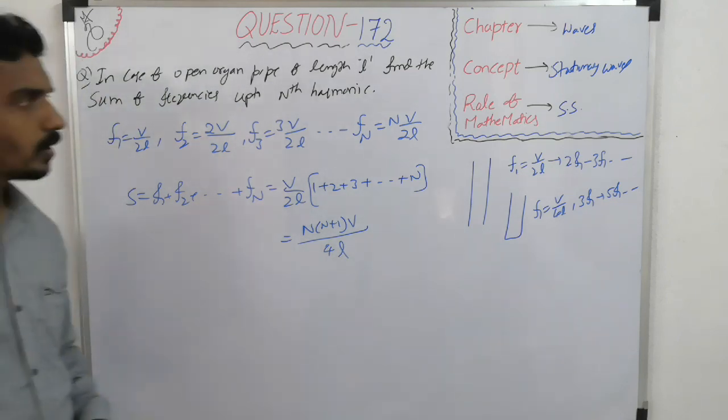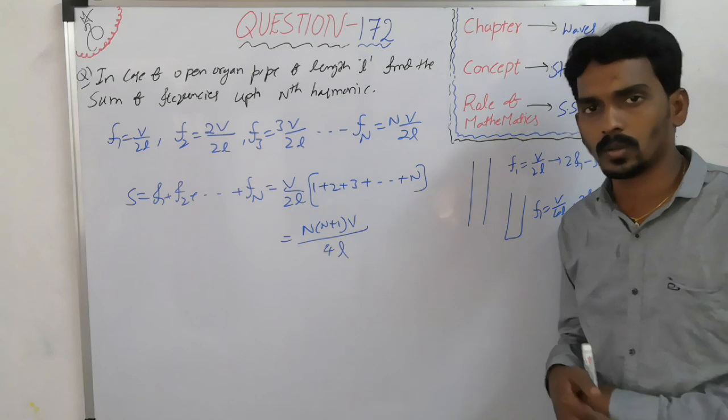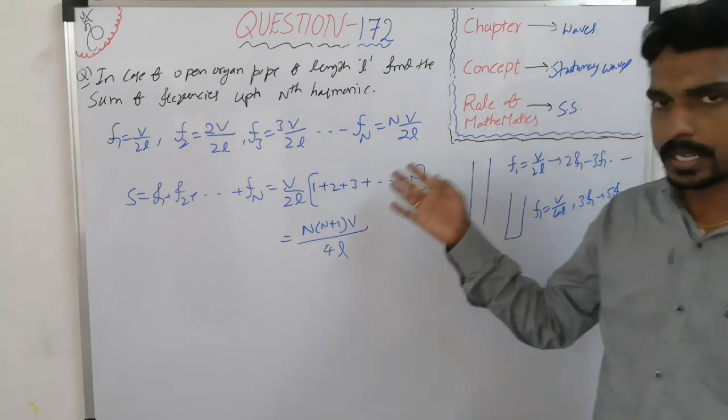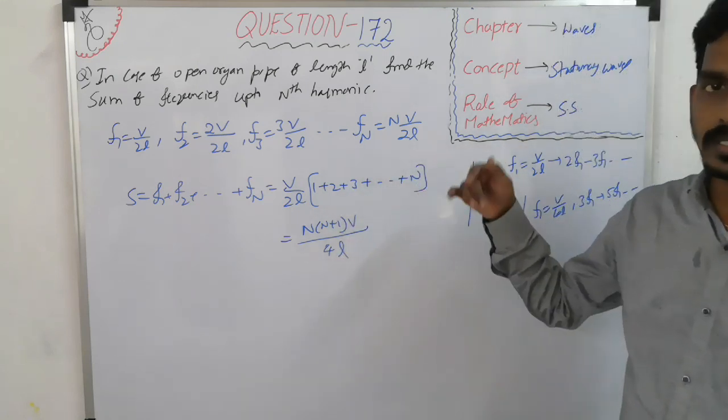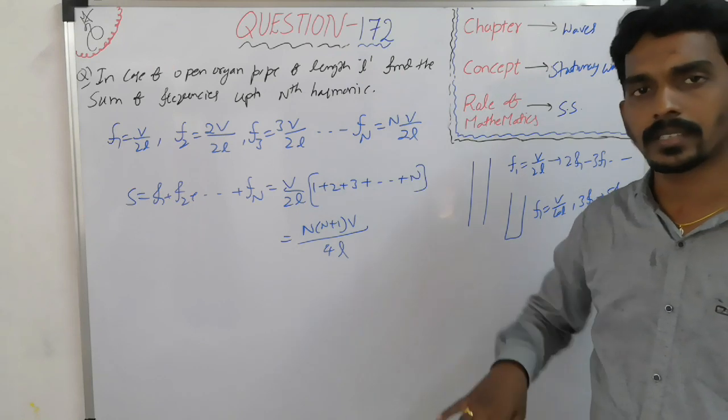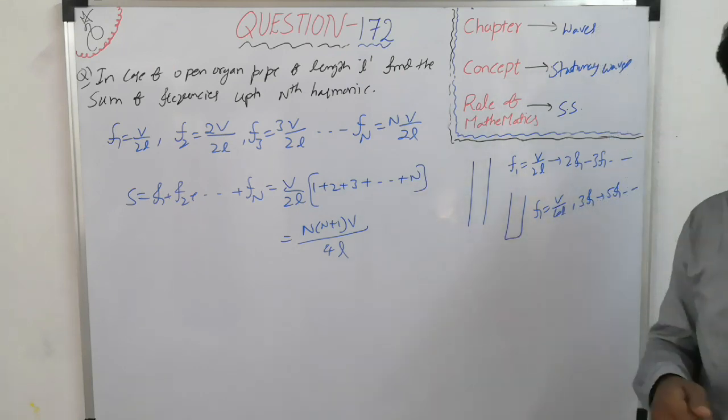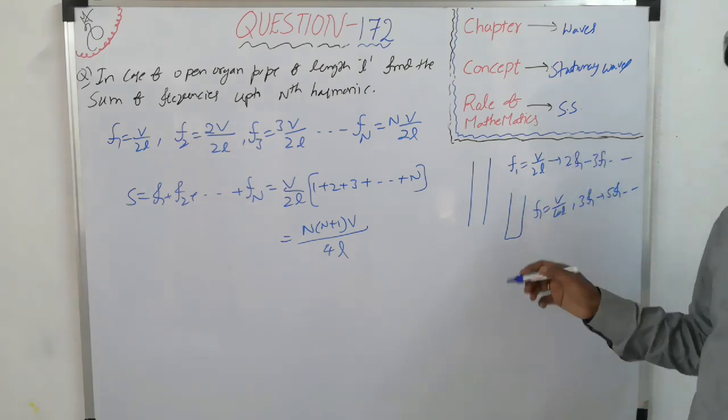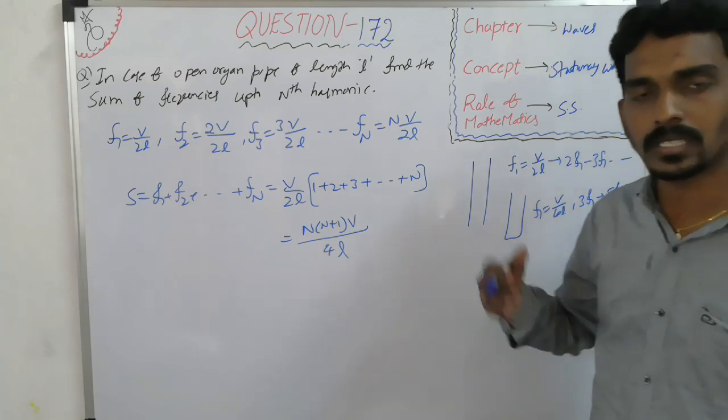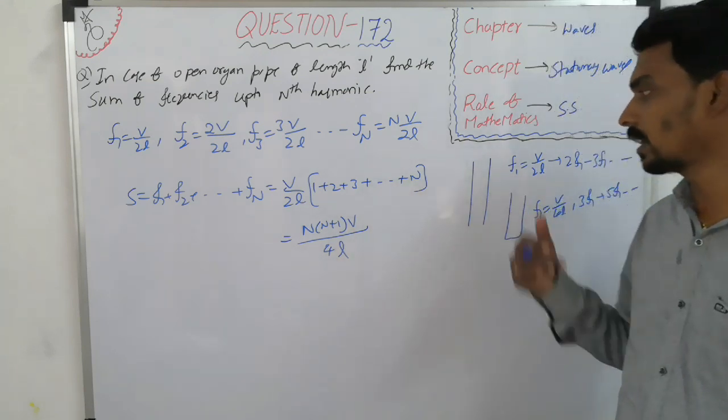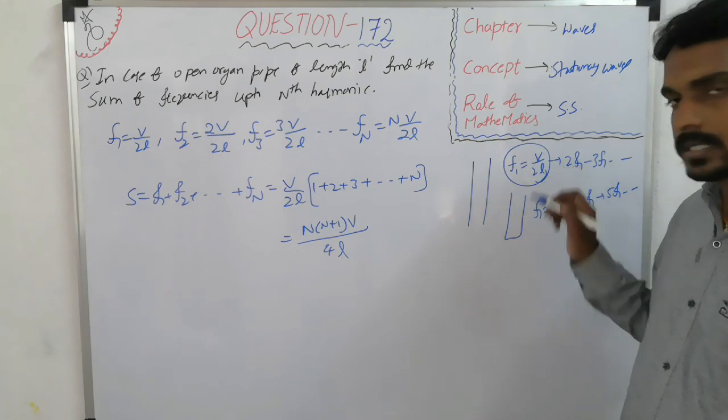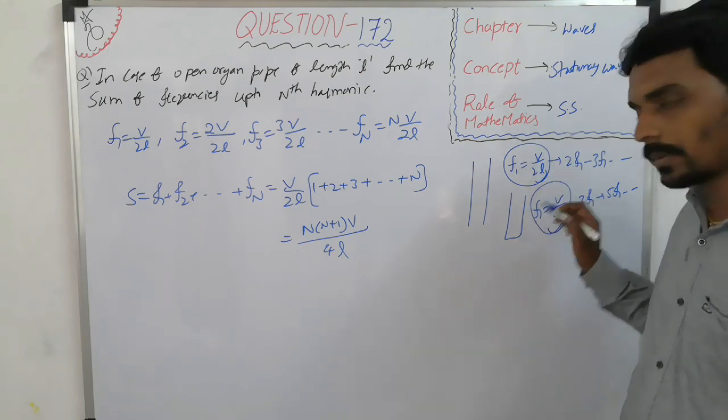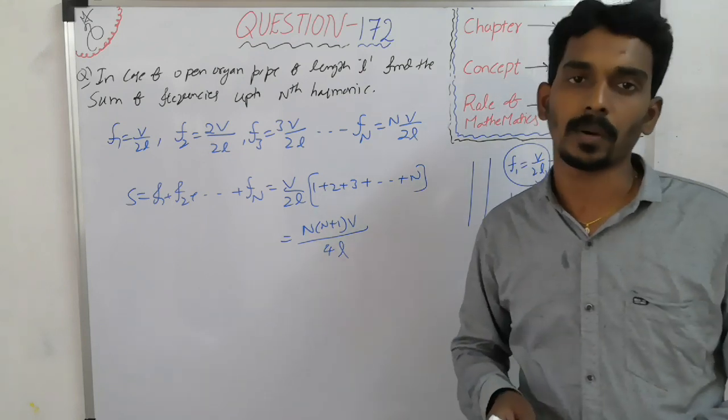This is how you can understand or remember the formula related to the fundamental frequencies of the second or nth harmonic in case of open or closed organ pipe. Nth harmonic means n times. Third harmonic means 3 times. Tenth harmonic means 10 times of fundamental frequency. And this is the fundamental frequency in open pipe. This is the fundamental frequency in closed pipe.